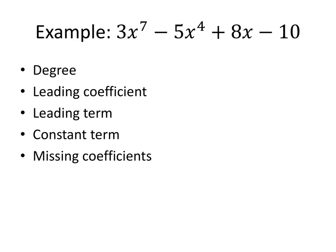The first is the degree of the polynomial, and that's simply the highest power of x that appears in the polynomial. So in this case, the degree of the polynomial is the number 7.